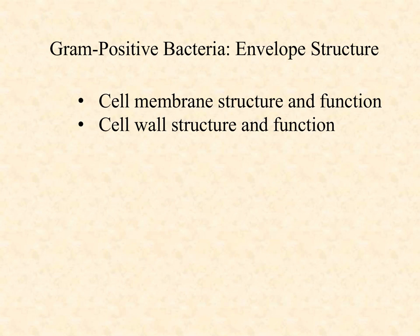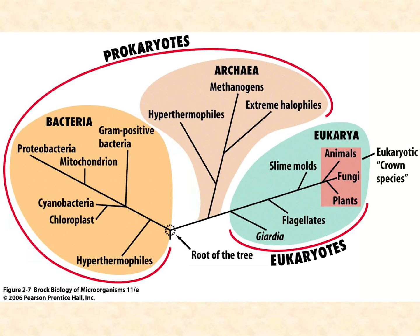So in a gram-positive, there are really only two layers to the envelope: the cell membrane and the cell wall. And we're going to look at the structure and function of each of those.